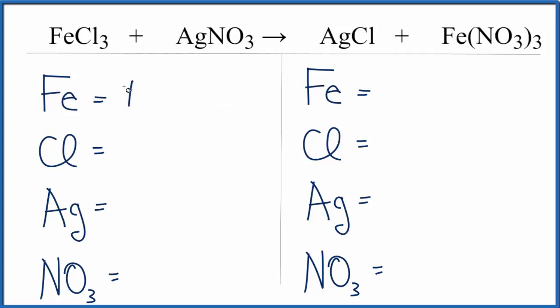We have one iron, three chlorines, one silver, and then because I have a nitrate ion here and some nitrate ions over here, I'm just going to count those as one item and that will make balancing a lot easier. So I just have NO3 here, I have one of those.